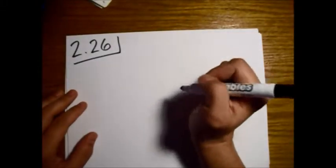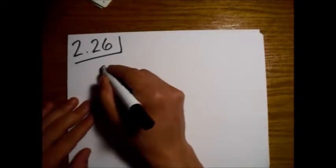Okay, so Griffiths Quantum Mechanics, problem 2.26. The first question is, what is the Fourier transform of the Dirac delta function? So let me go ahead and write this out.